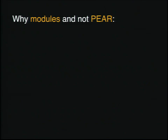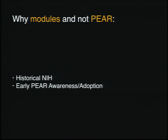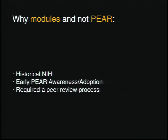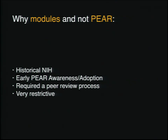So why did we end up with modules and not actually adopt something like PEAR? I would point to the fact that historically Drupal has a real not-invented-here syndrome problem that we're only just now kind of breaking out of. There's also a question around the early awareness of PEAR, not only within the Drupal community but perhaps PHP at large, so adoption wasn't really likely. It also required a peer review process to get anything up there, which meant it was very restrictive and thus not all that heavily adopted — certainly not at the same scale that we're seeing other solutions today.